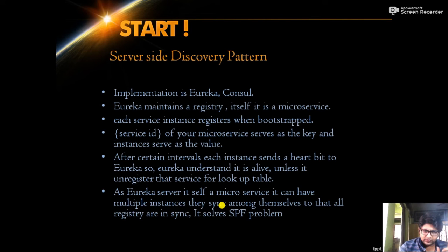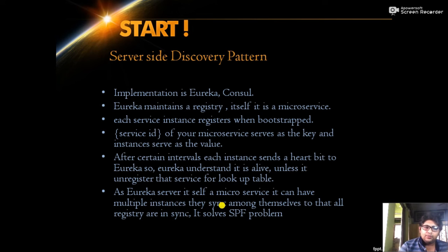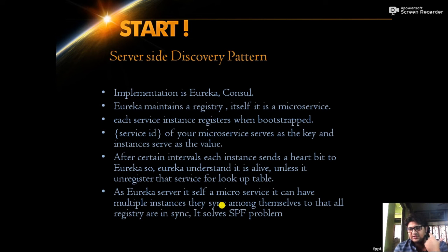Now consider a tricky scenario: Eureka server holds all the instance metadata for your entire microservice architecture. What if that Eureka server itself goes down? If there is only one Eureka instance and it goes down, your whole microservice architecture is in jeopardy. Therefore, you cannot have a single instance of the Eureka server — you need multiple Eureka server instances. That is why Eureka server itself is a microservice and can have multiple instances.